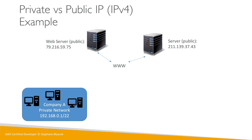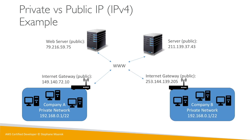When a company has a private network, that network has a private IP range. All the computers within that private network can talk to one another using private IPs. When they need to reach the internet, they go through an internet gateway — a public gateway — which gives those instances access to other servers. This is a common pattern in AWS.